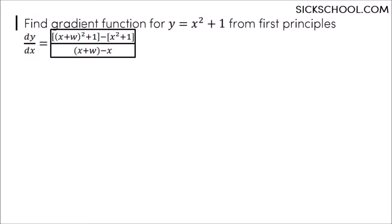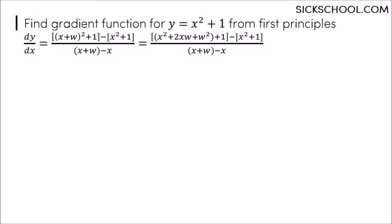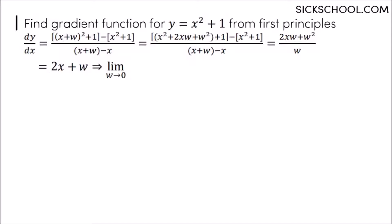Multiply out the brackets. Simplify — simplified even more. This is only the gradient when w is almost zero, so this disappears, and the gradient becomes this. Booyaka!